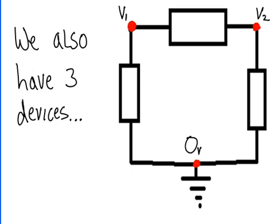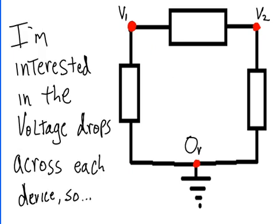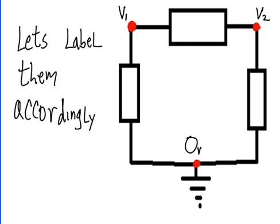We also have three devices. A, B, and C. I'm interested in the voltage drops across each device. So, let's label them accordingly.